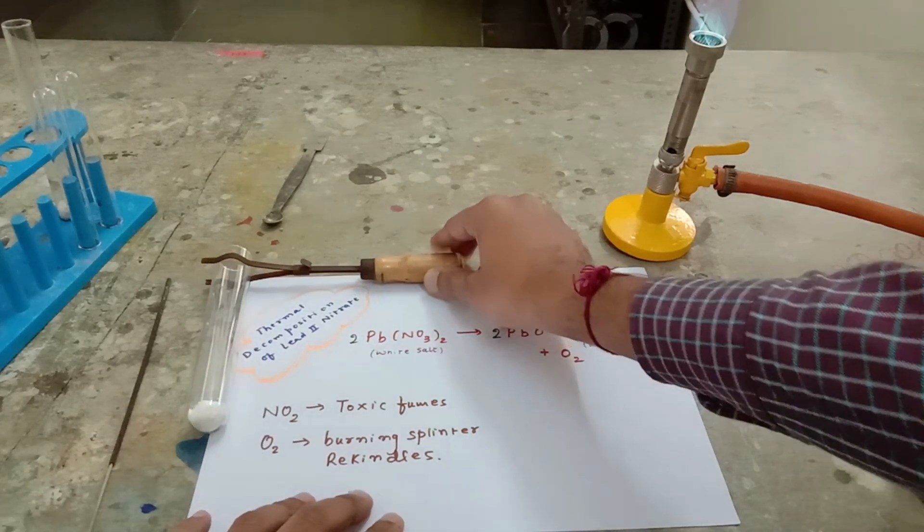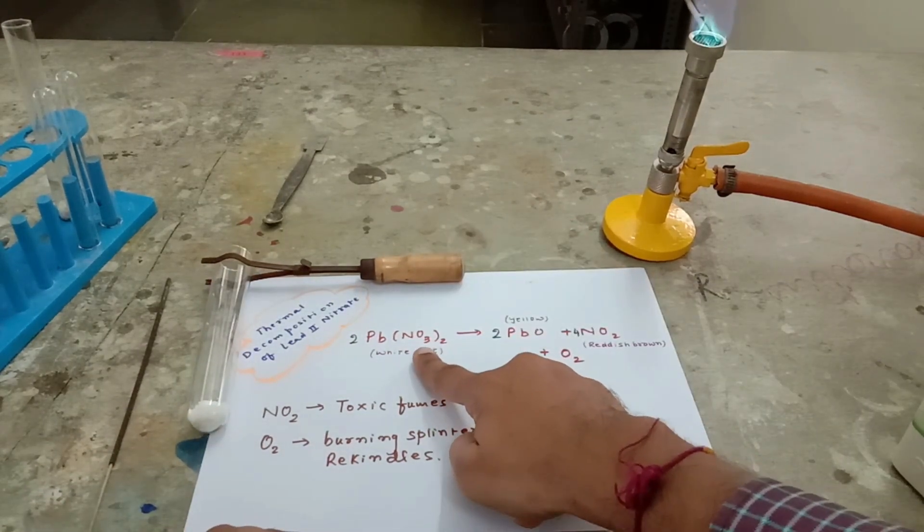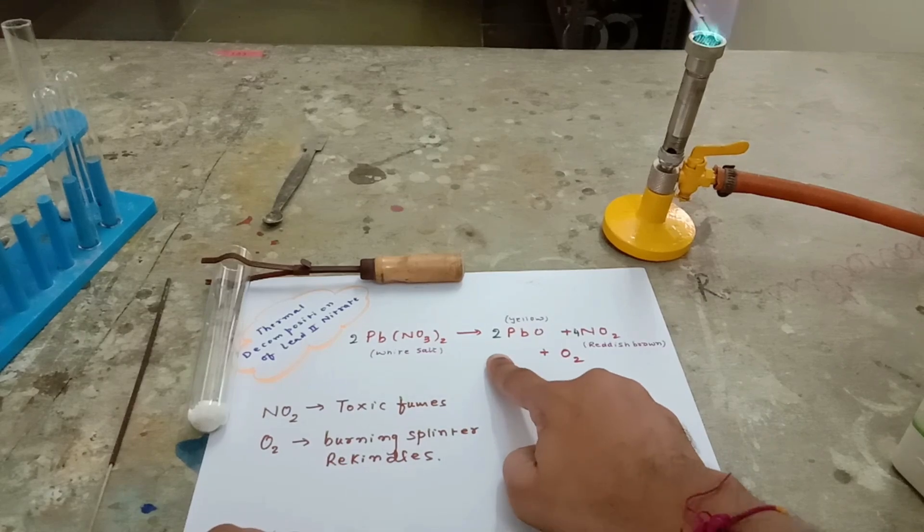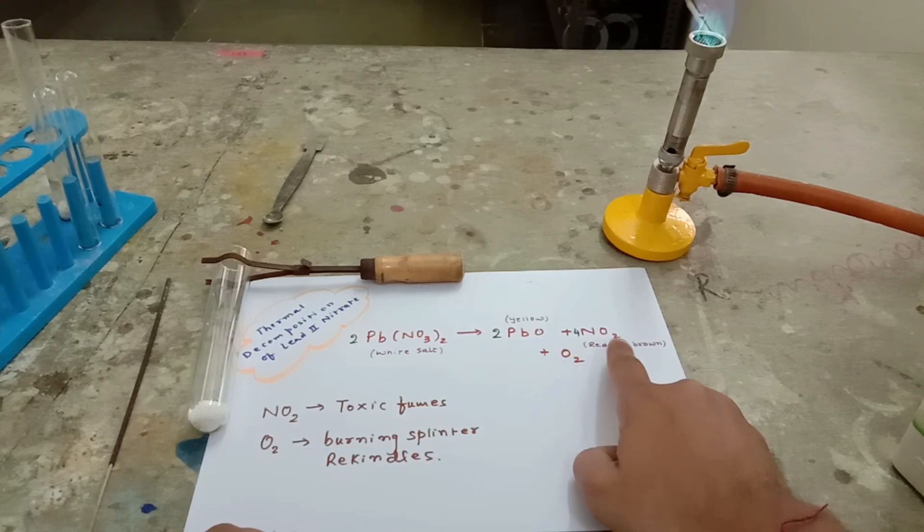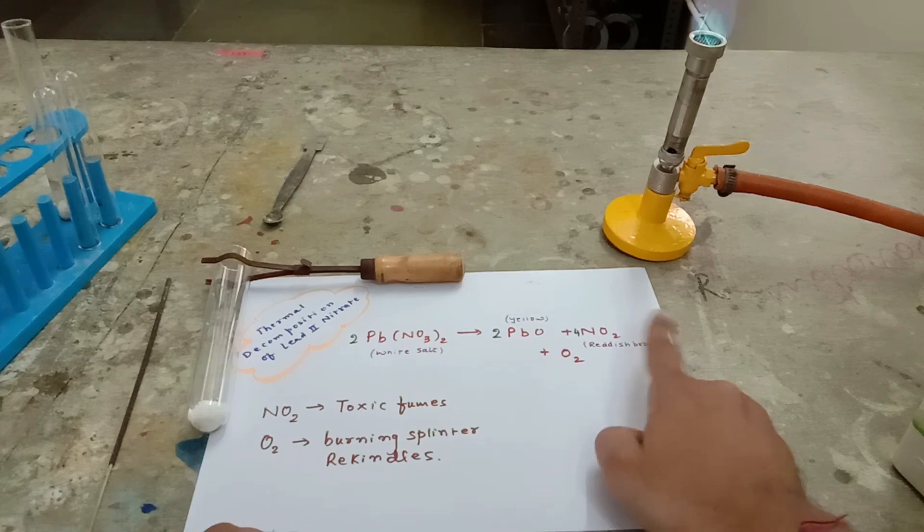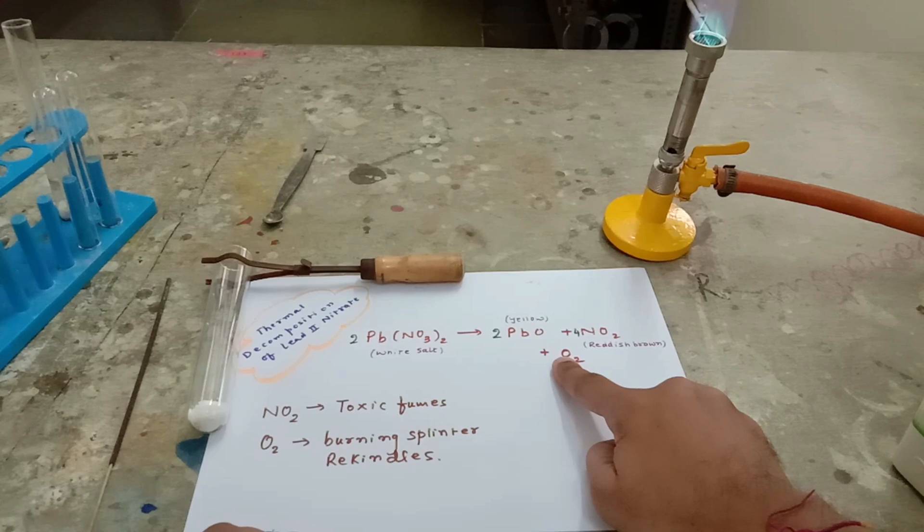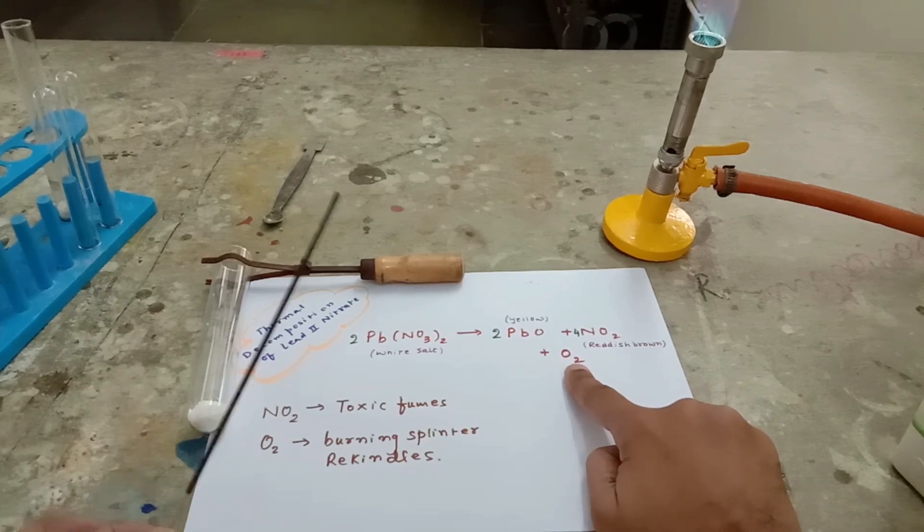The reaction goes as follows: lead nitrate Pb(NO3)2 decomposes in presence of heat to form lead oxide plus nitrogen dioxide and oxygen gas. Nitrogen dioxide is a toxic gas, reddish brown in color, and oxygen gas can be checked by the help of the incense stick.